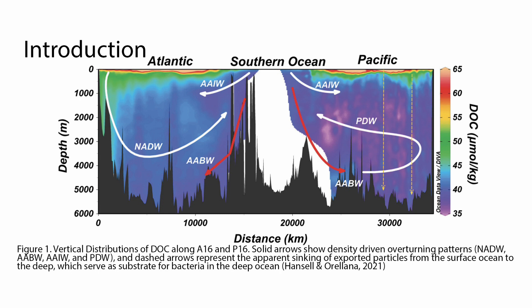DOC concentrations are high in the surface ocean and get lower as depth increases. This is because refractory DOC and semilabile DOC, which have lifetimes of a few millennia to a couple of months to a couple of years, are all produced in the surface ocean. Then POC sinks down and dissolved organic carbon is advected down with the ocean currents, as you can see. This creates the vertical gradient.